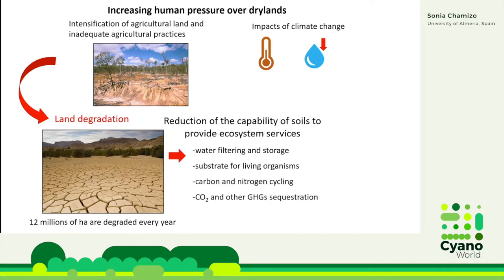This will reduce the capability of dryland soils to provide ecosystem services, such as water filtering and storage, the capacity to provide substrate for living organisms, their ability to regulate the carbon and nitrogen cycling, and also their ability to act as CO2 and other greenhouse gases reservoirs.